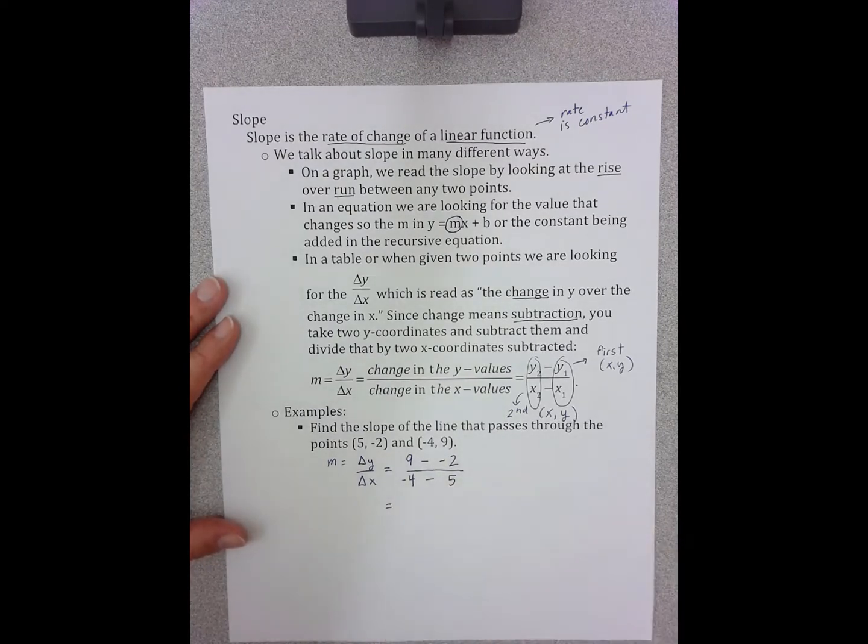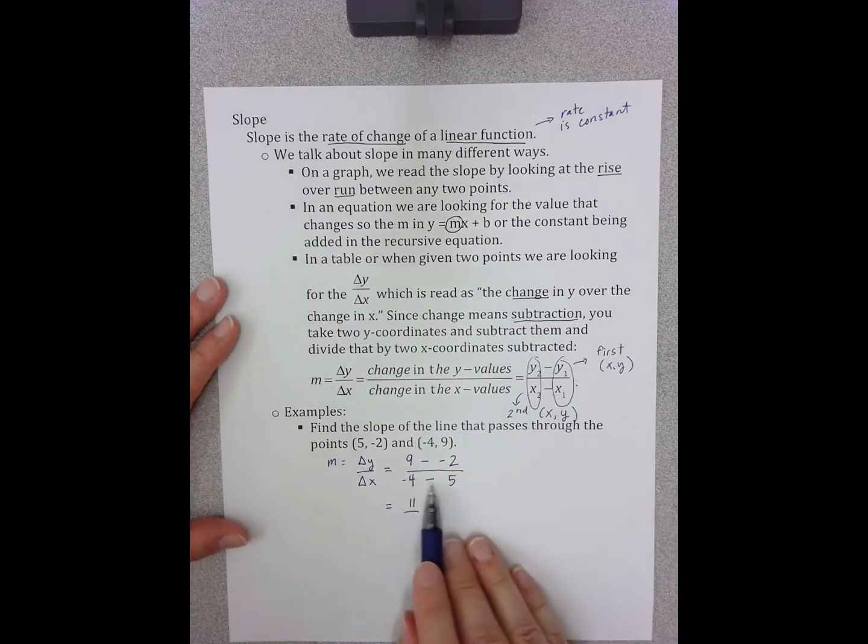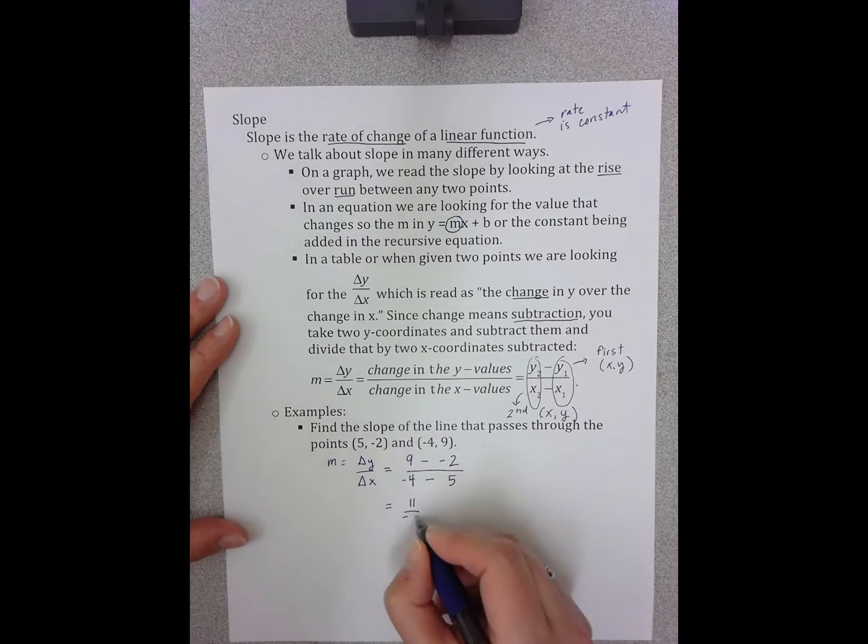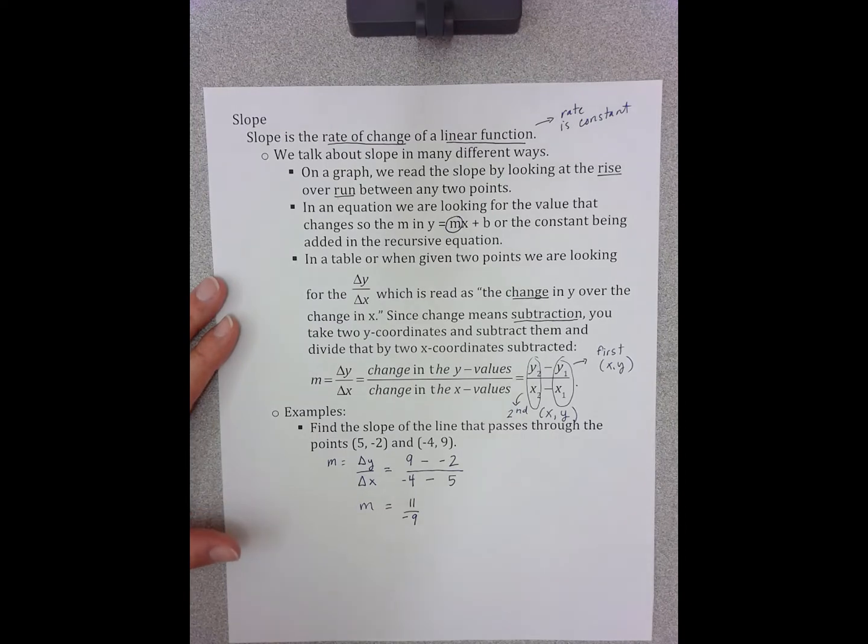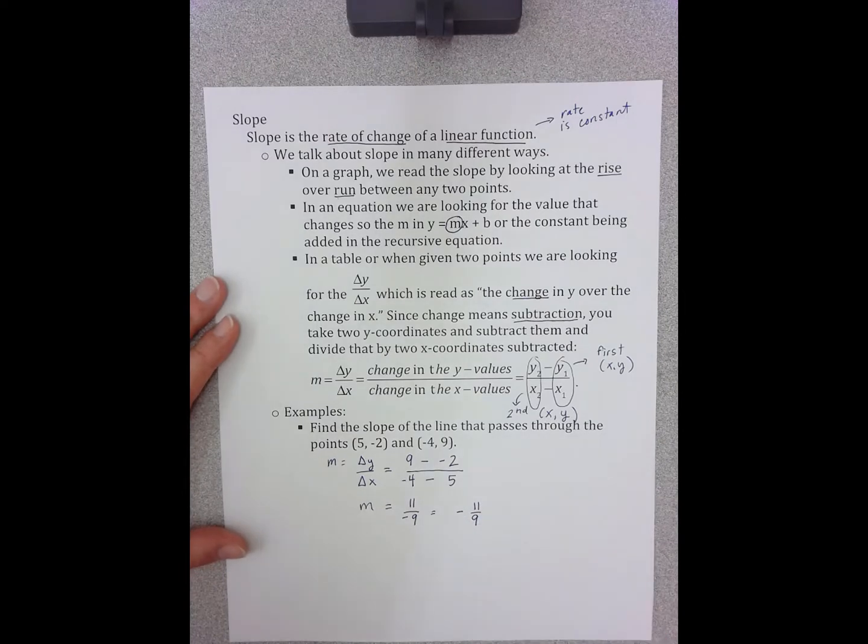And now I simplify. So 9 minus negative 2 is positive 11. Negative 4 minus 5 is negative 9. And so my slope is 11 over negative 9. And remember that that is the same as negative 11 over 9, and it's the same as negative 11 ninths. All of these mean the exact same thing.